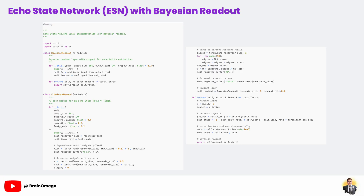The network also keeps track of its own internal state. Every time it receives a new input, it updates this state using a leaky integration formula. This formula is important because it balances the influence of new information with the memory of previous states. The leaky rate hyperparameter controls this trade-off, allowing you to tune the ESN's memory for the task at hand.